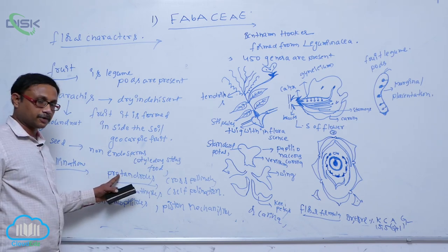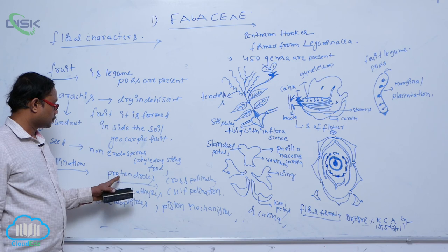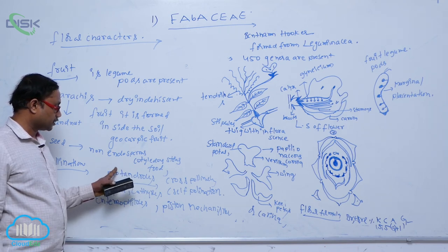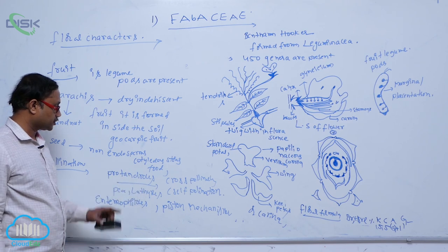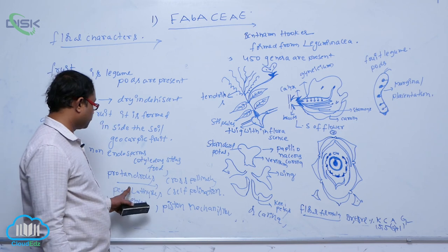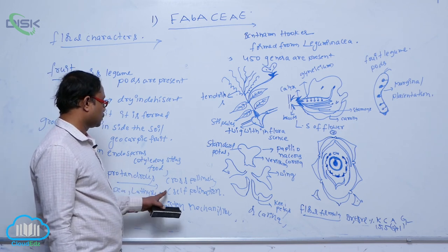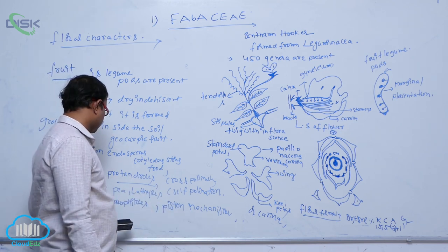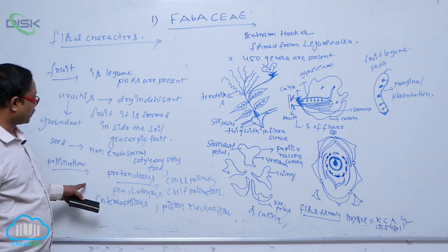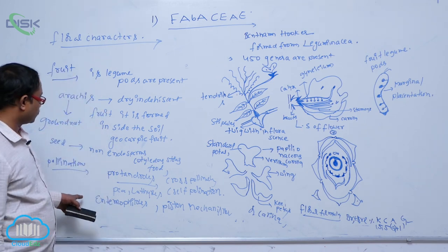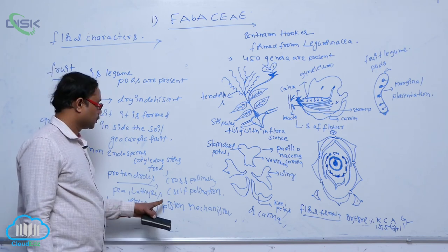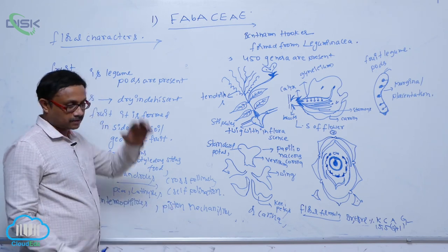Pollination — protandry means stamens mature earlier than the gynoecium, which leads to cross-pollination. That is known as protandry; andros means androecium. But in some plants like Pisum and Lathyrus, self-pollination occurs. These flowers attract insects — that is known as the entomophilous condition — showing the piston mechanism.